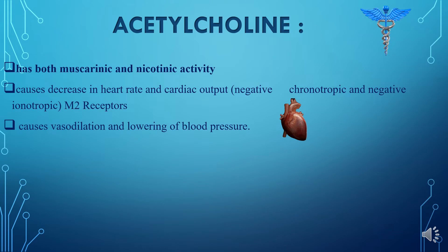Acetylcholine also causes vasodilation, through which blood pressure is also lowered. It does this by binding to M3 receptors found on the endothelial cell lining the smooth muscles of the blood vessel, inducing the production of nitric oxide from arginine. That nitric oxide then stimulates protein kinase G production, leads to hyperpolarization, and also relaxes smooth muscle through phosphodiesterase 3 inhibition.